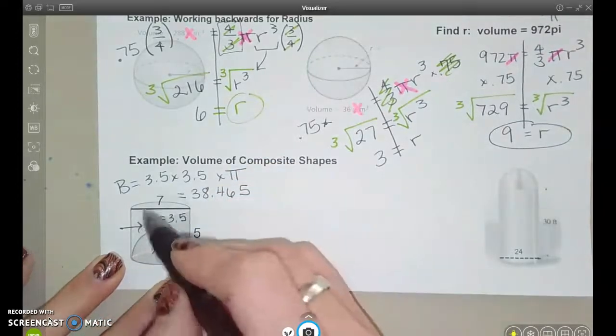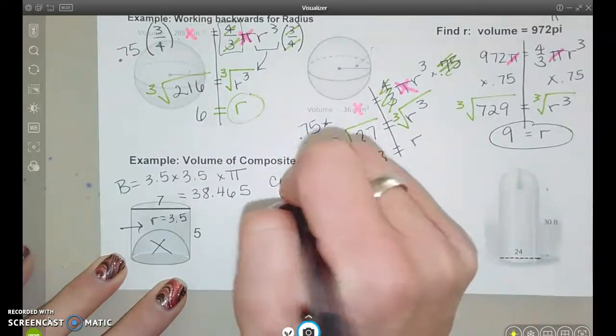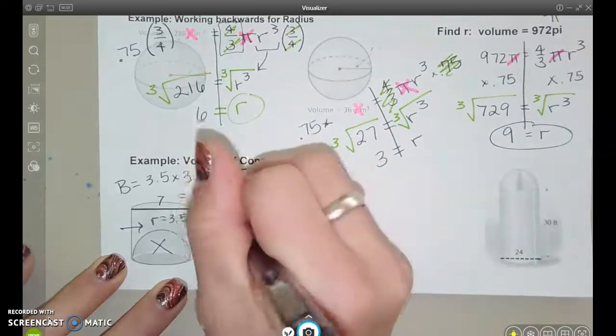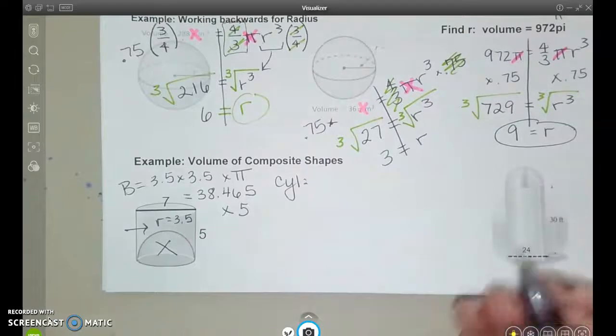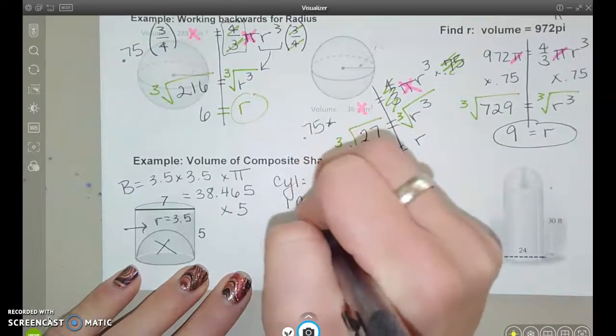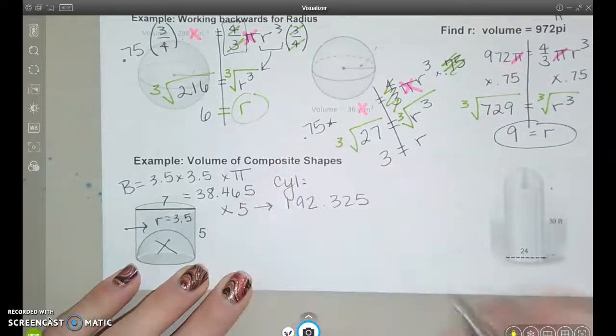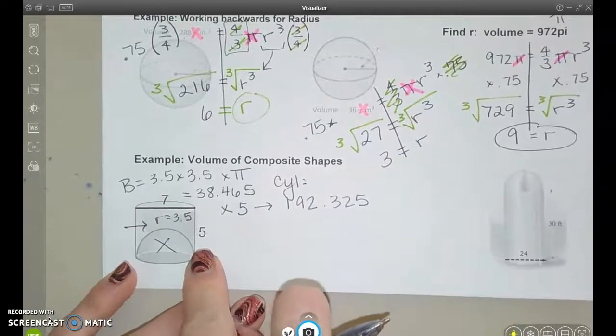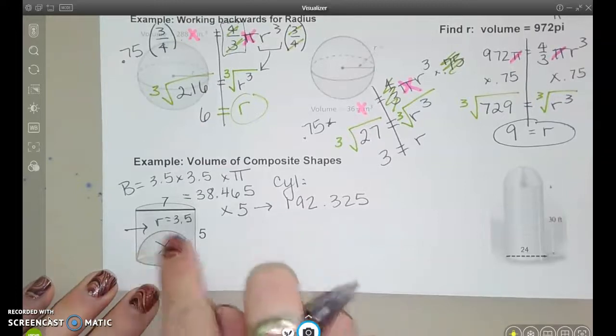So to find the volume of the cylinder first, let's find that. I'm going to write cylinder. I know I'm going to do capital B times 5, times the height. So when I type that in, the cylinder comes out to 192.325. So I did area of the base times the height. That gives me the volume of the cylinder.